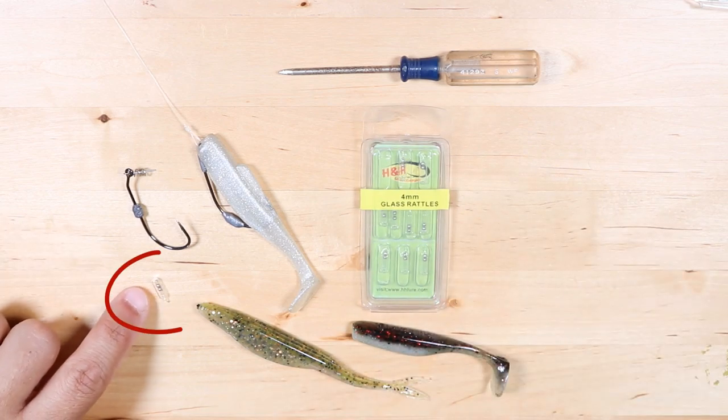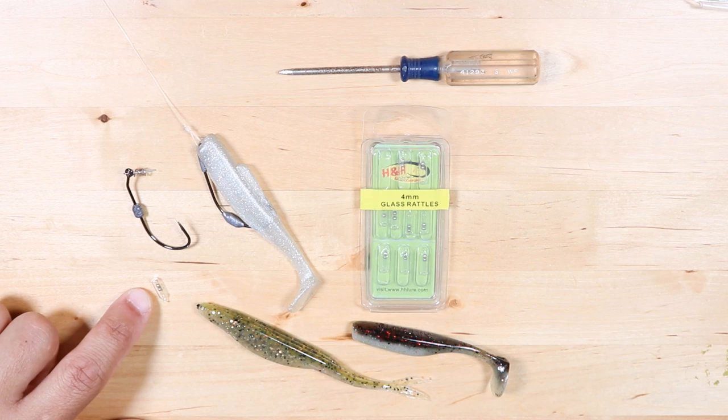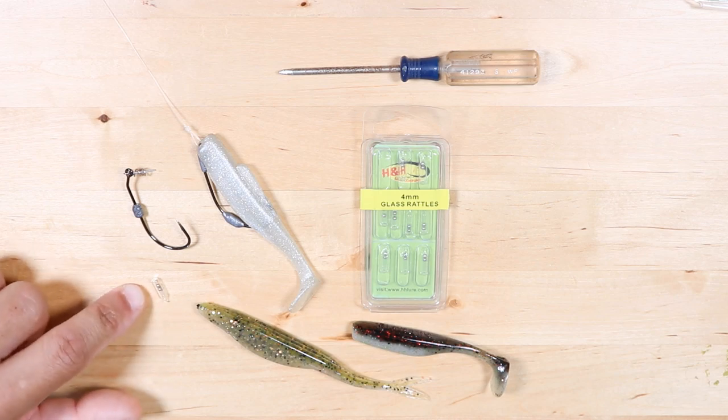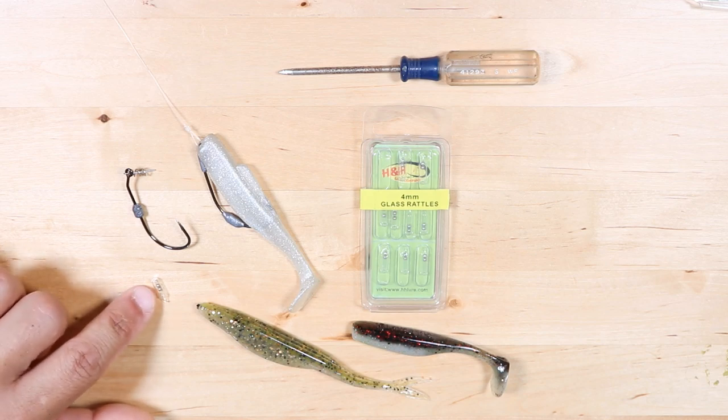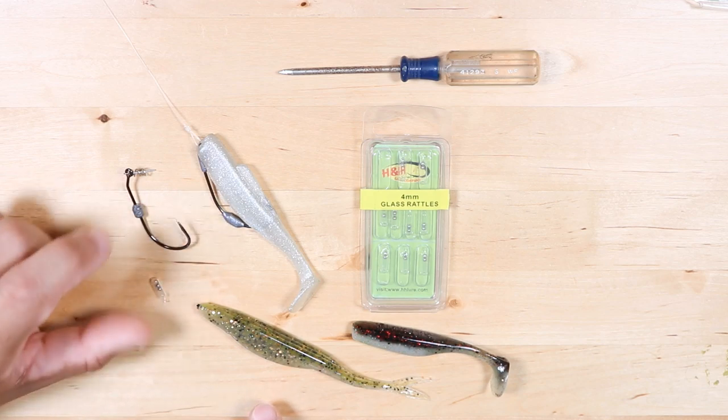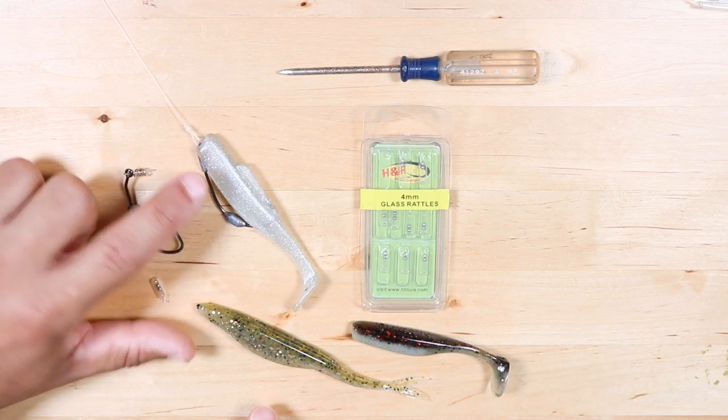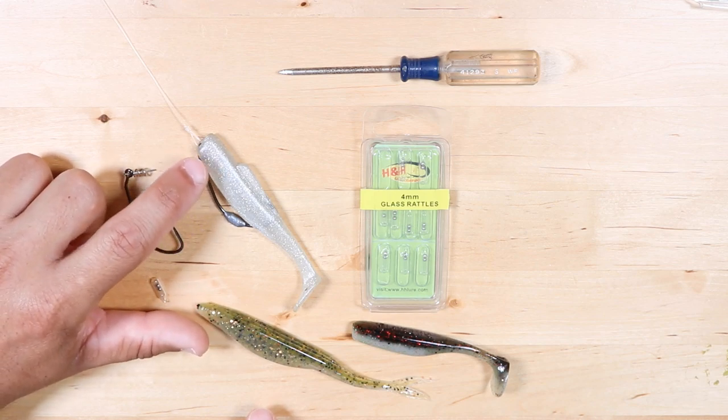This is the one I have here. You can see how small it is compared to the lures and also the hook. It has two little metal beads inside of a glass tube. As far as rigging these up, first things first, you want to make sure it doesn't get in the way of your hook when you're rigging up your lure.